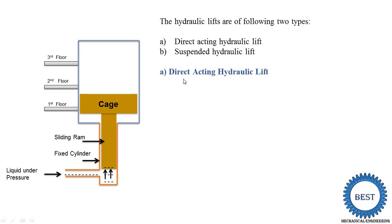First we study the direct acting hydraulic lift. In this figure you see the direct acting hydraulic lift. It contains three major components. The first component is the fixed cylinder. The second component, inside this cylinder, is the sliding ramp. Sliding is a type of motion, so this ramp slides up and down inside the fixed cylinder — that is why it is known as the sliding ramp. Inside this cylinder, we supply liquid under pressure.